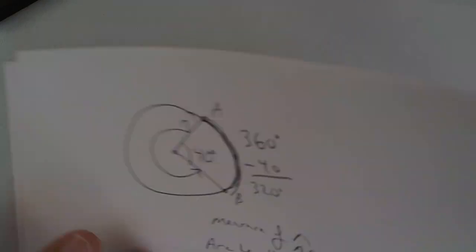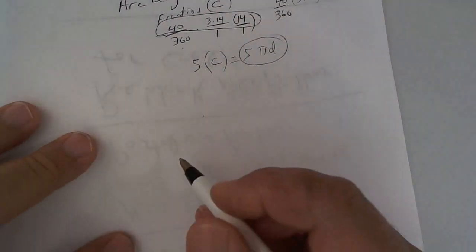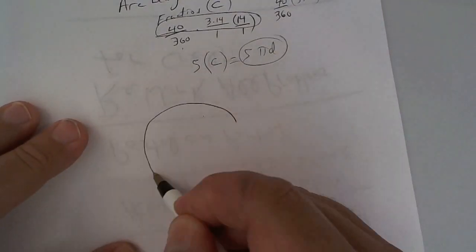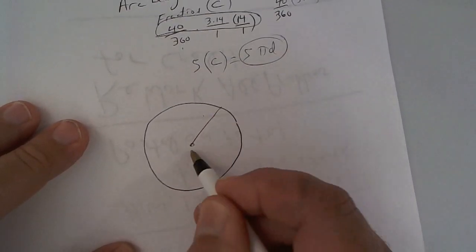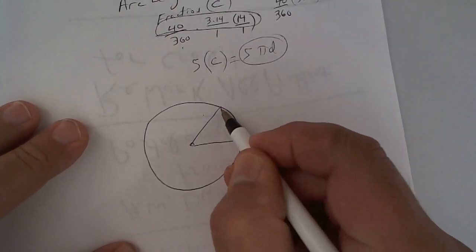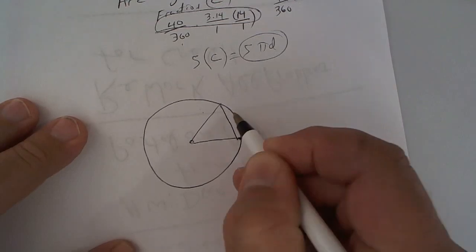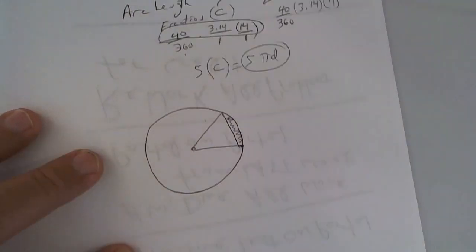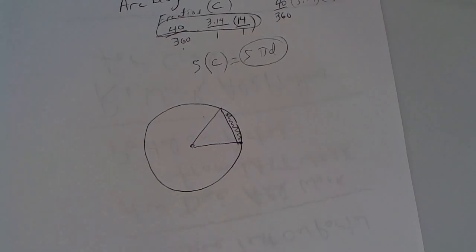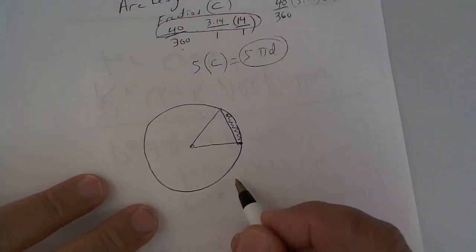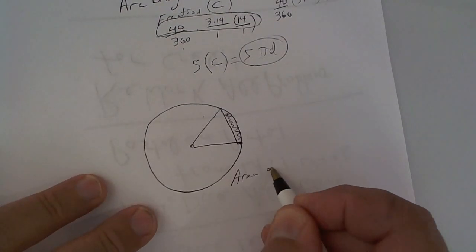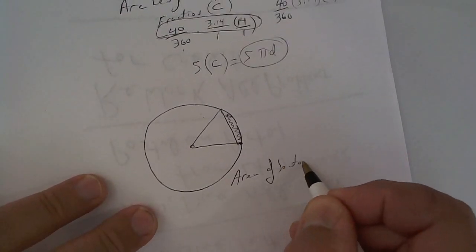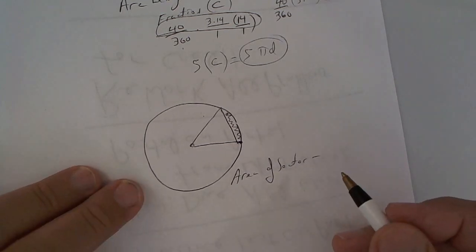Alright, the only other thing I want to talk about is this. Let's say you have a circle, you have an area of a sector and they want to find the slither, this little outside piece here. We'll call it a slither. To do that, you would do the area of the sector minus the triangle.